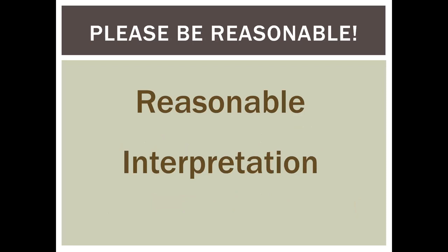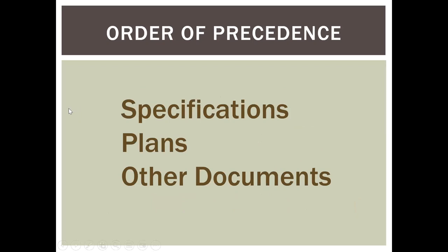Another aspect is reasonable interpretation — if there's a dispute and you go to a judge, they will use the reasonable interpretation argument and decide what a reasonable person on the street would think of the language. There's also an order of precedence: in a contract there are many different components. From my experience, specifications always precede the plans — so if there's confusion between the two, the specifications win out. The same applies to any permits or other environmental documents included in the contract as reference; the specifications take precedence over those.